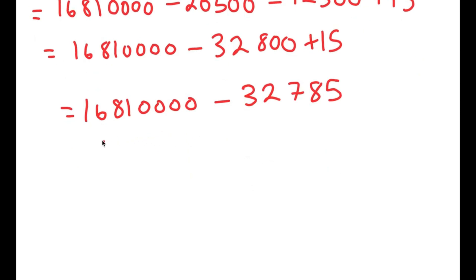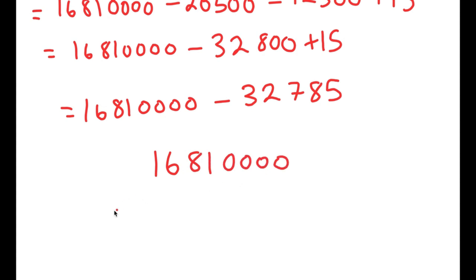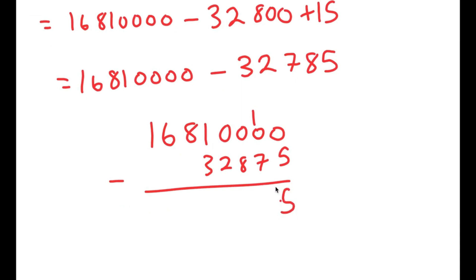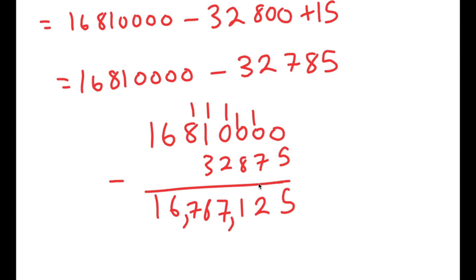Now I have 16,810,000 minus 32,785. Working through the subtraction: 10 minus 5 is 5, 9 minus 7 is 2, 9 minus 8 is 1, 9 minus 2 is 7, 10 minus 3 is 8 (borrowing), 8 minus 1 is 7, and I have 6 and 1 remaining. So 16,787,125 is my final answer.